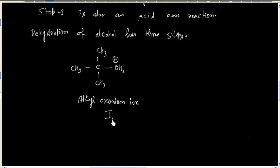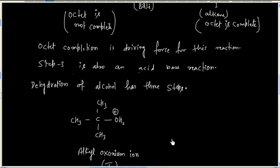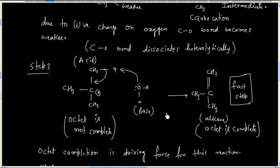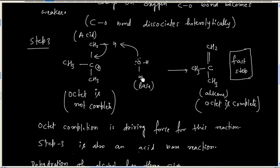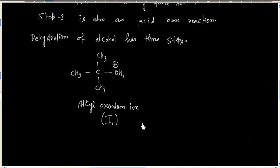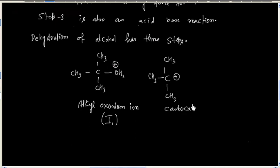Let us call the first intermediate I1 — the alkyloxonium ion. The second intermediate is the carbocation, which we will call I2.